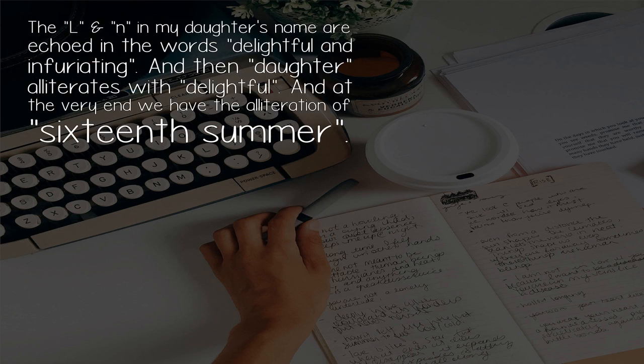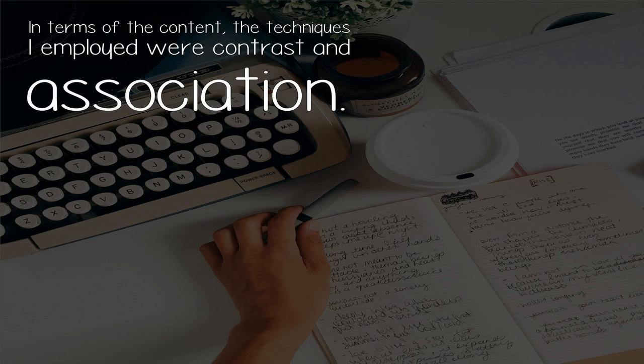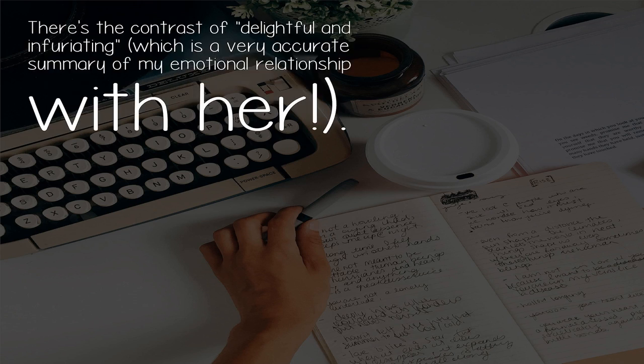Then there's the phonetic patterning. The L and N in my daughter's name are echoed in the words "delightful" and "infuriating," and then "daughter" alliterates with "delightful." At the very end we have the alliteration of "16th summer," and we have the assonance of "my delightful infuriating" in "16th daughter her summer."